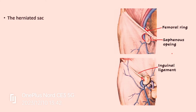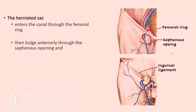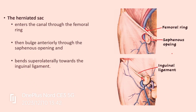The hernia sac containing loops of intestine enters the femoral canal through the femoral ring, then bulges anteriorly through the saphenous opening, pushing the cribriform fascia forward. After that it bends superolaterally towards the inguinal ligament. So the path is: first descends through the femoral ring, then bulges anteriorly through the saphenous opening, then bends superolaterally towards the inguinal ligament.